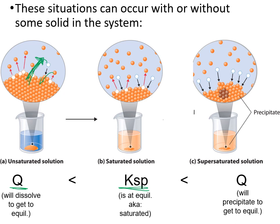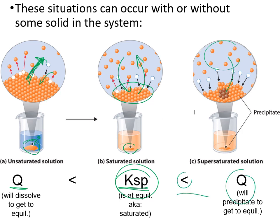If Q is less than Ksp, there's going to be more dissolving than crystallizing, so that lump of solid will continue to dissolve into solution. Just because you have a lump doesn't mean it's supersaturated — it could be dissolving and crystallizing at the same rate, which is equilibrium. If Q is greater than Ksp, the system shifts left: ions crystallize out faster than they dissolve, growing the crystal.